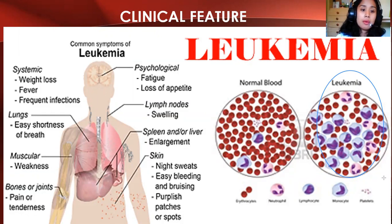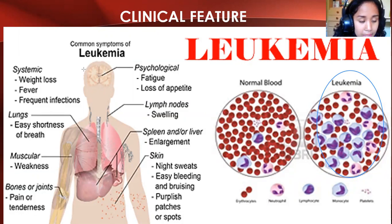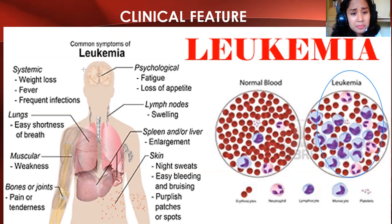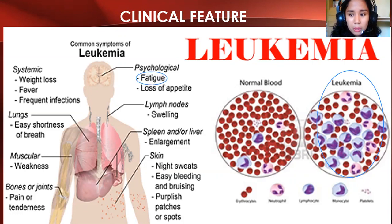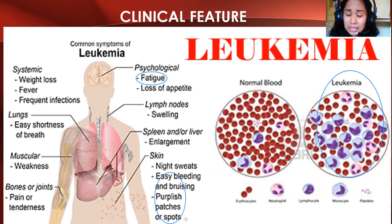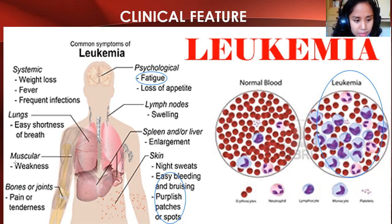The effects include: anemia — decreased normal red blood cells leading to fatigue, weakness, and easy shortness of breath. Also easy bleeding and bruising, purplish patches or spots due to decreased megakaryocytes and normal platelets. There is also muscular weakness related to decreased red blood cells, and bone and joint pain or tenderness.